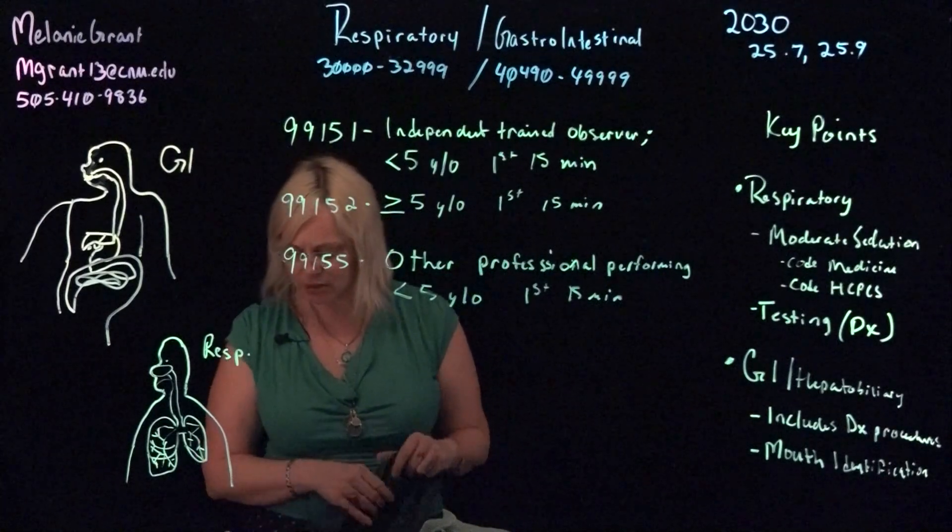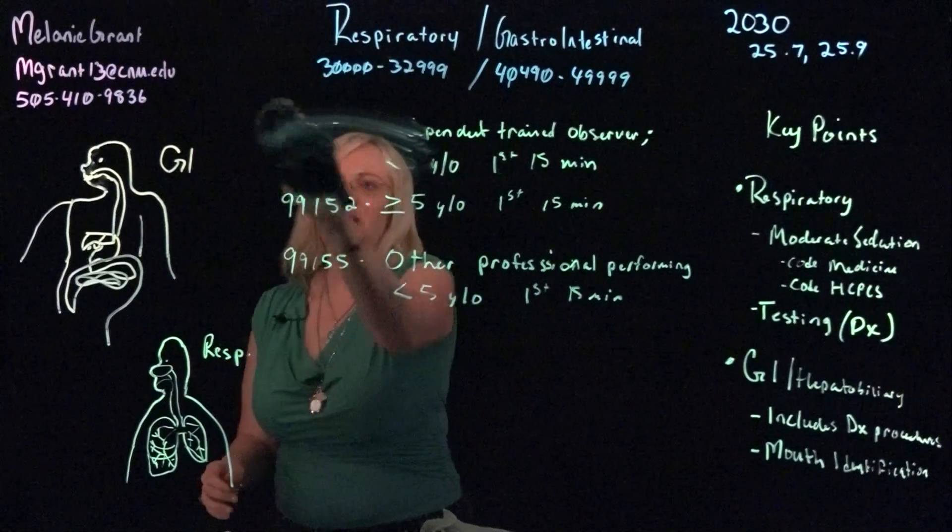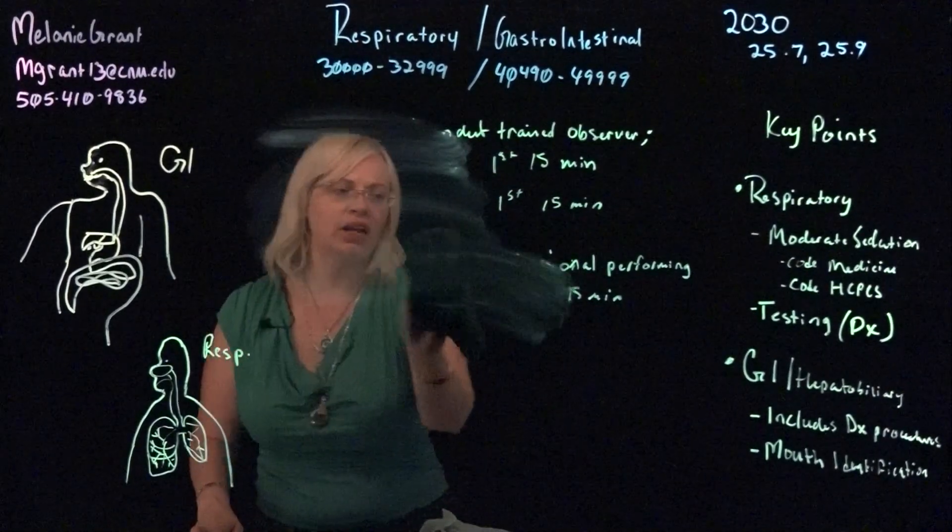It's easy to get lost in these and for this reason I like to look at the chart on the previous page because it breaks it down in a lot better detail for you including the exact time of the intra service for moderate sedation and the patient's age and which codes you would use. Some people will find this easier when adding these codes.